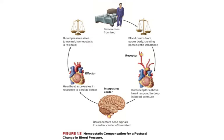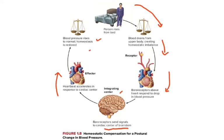A more complex example: when a person rises from bed, blood drains from the upper body, creating a homeostatic imbalance. Baroreceptors detect the drop in blood pressure above the heart and send signals to the cardiac center of the brain stem. The heartbeat accelerates in response, blood pressure rises to normal, and homeostasis is restored. This is postural homeostatic compensation — when you go from lying down to standing, gravity pulls blood into the legs and the body corrects the resulting blood pressure change.